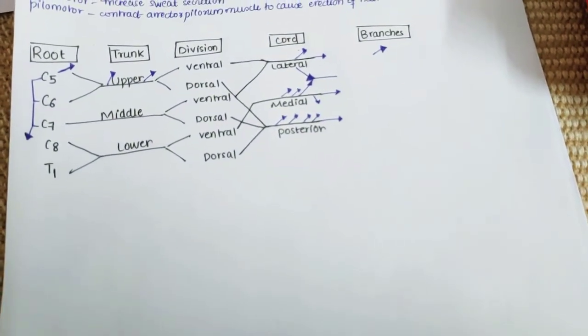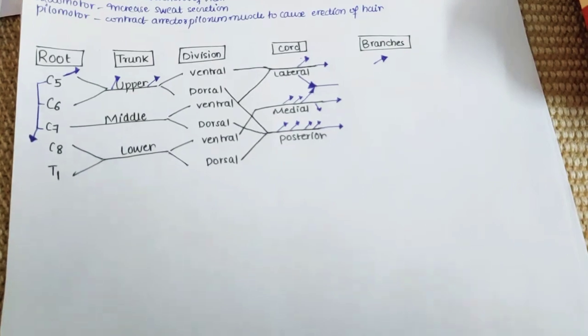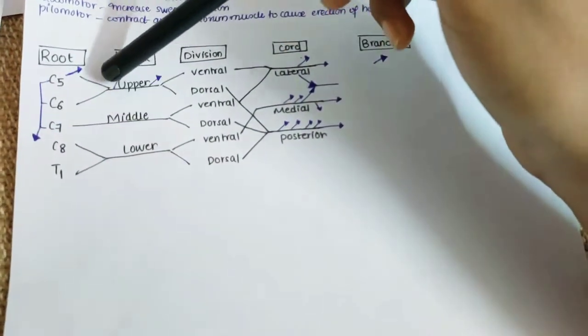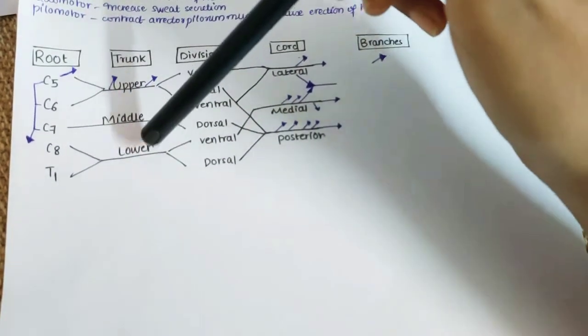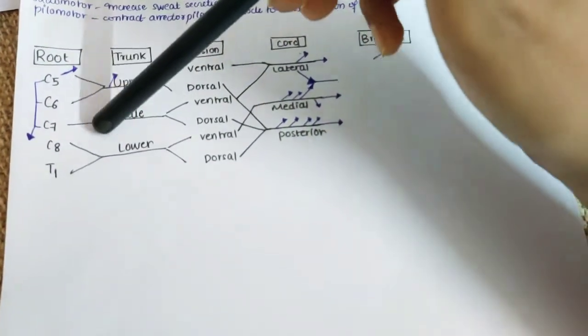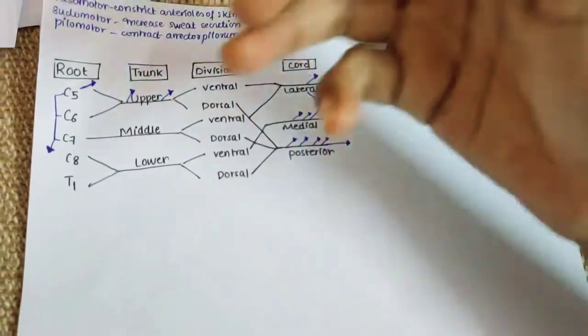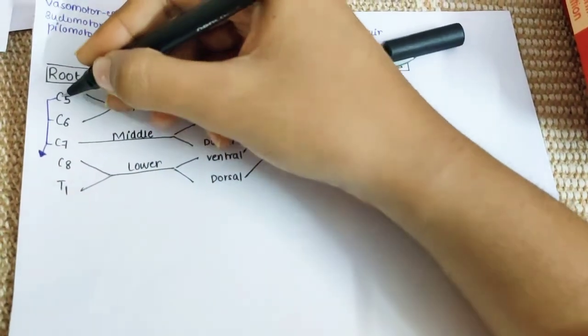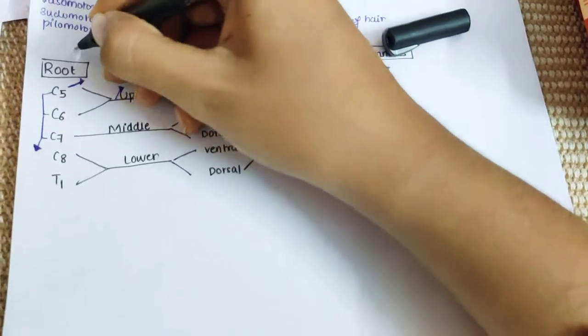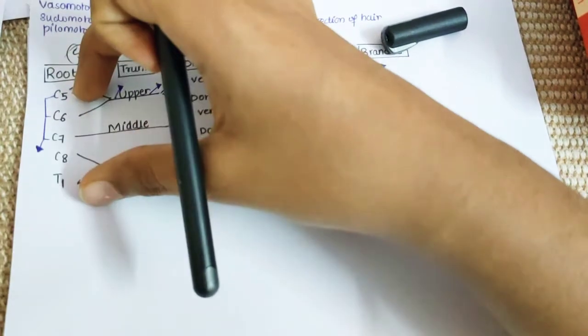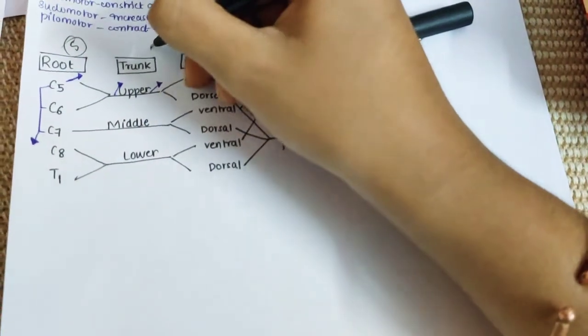The root values C5 to T1 are divided into trunks. C5 and C6 together form the upper trunk, C7 alone forms the middle trunk, and C8 and T1 together form the lower trunk. In total, there are five roots and three trunks.